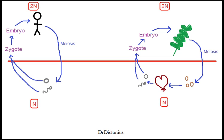The plant life cycle is a little bit different. The main distinguishing factor is that the plant life cycle has two multicellular bodies — one here and one here. This diploid multicellular body is called the sporophyte, and this haploid multicellular body is called the gametophyte.